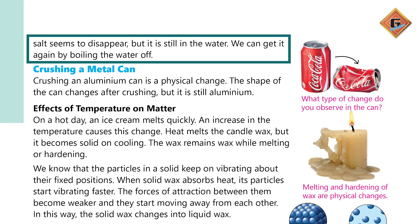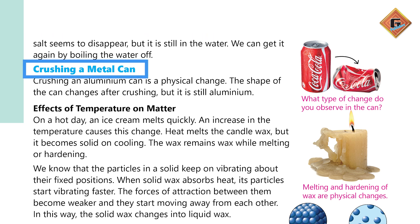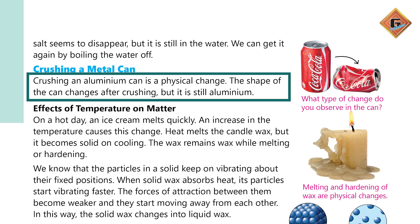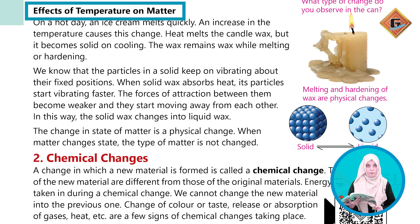We can get the salt again by boiling the water — ہم اس salt کو again appear کروا سکتے ہیں جب ہم اس salty water کو boil کریں گے۔ Crushing a metal can: crushing an aluminium can is a physical change. The shape of the can changes after crushing but it is still aluminium — اس کی chemical property ابھی بھی same ہے، صرف اس کی physical appearance change ہوئی ہے۔